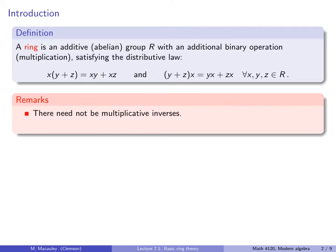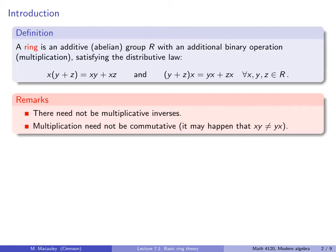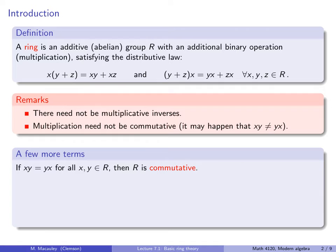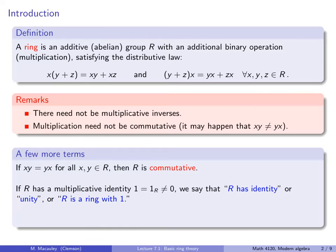Several remarks: there need not be multiplicative inverses — we have multiplication but not necessarily division. Also, multiplication need not be commutative; it may happen that xy ≠ yx. If multiplication is commutative, we say R is commutative — we use that term rather than abelian for rings. If R has a multiplicative identity element, usually written 1 (required to be distinct from the additive identity), we say R has identity, or unity, or is a ring with one.